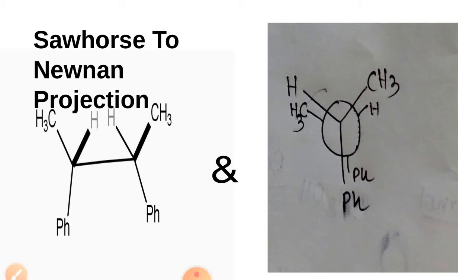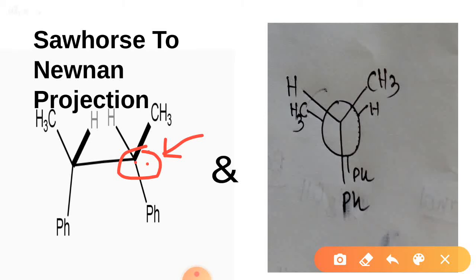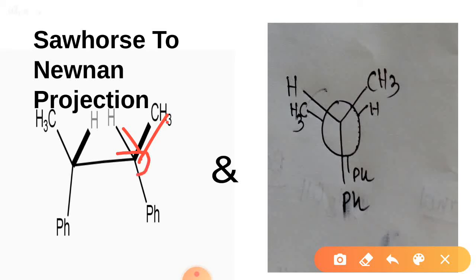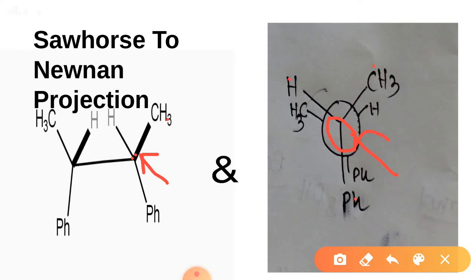Now, sawhorse to Newman projection. In sawhorse to Newman projection, we have to identify each carbon. First, we consider that left carbon as carbon 1 — the front carbon. We will place that front carbon here and back carbon behind it. The front carbon contains CH3, and is attached with methyl, hydrogen, and phenyl. The back carbon is attached with hydrogen, methyl, and phenyl.